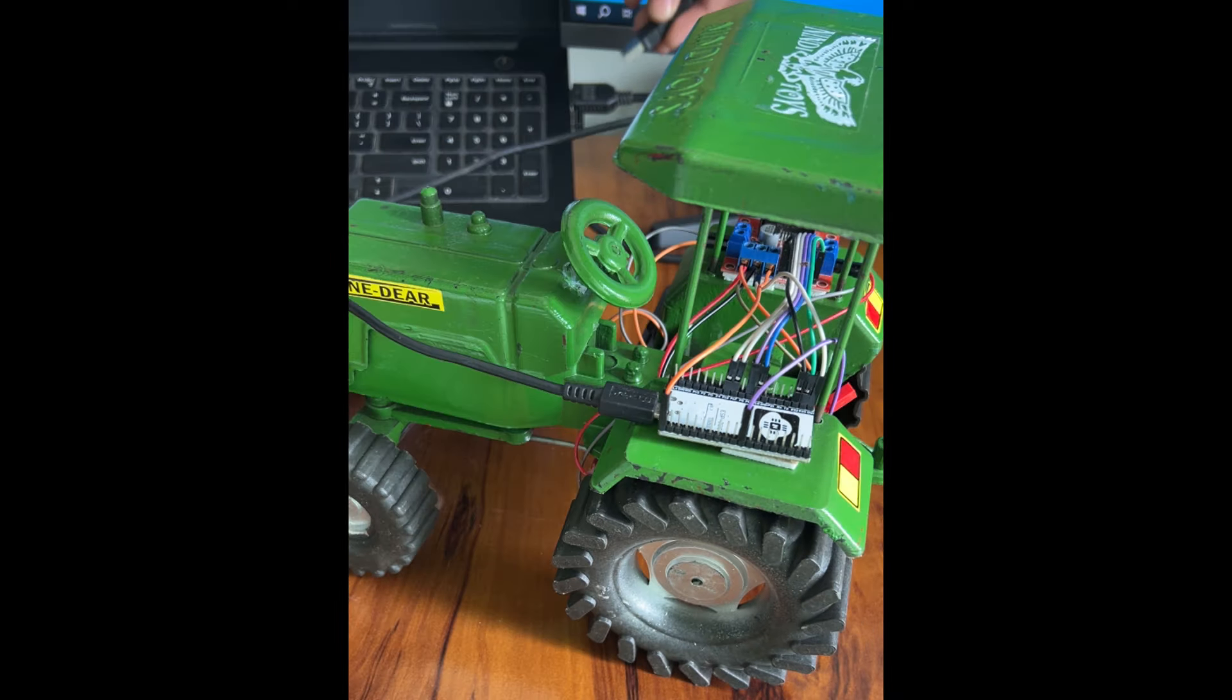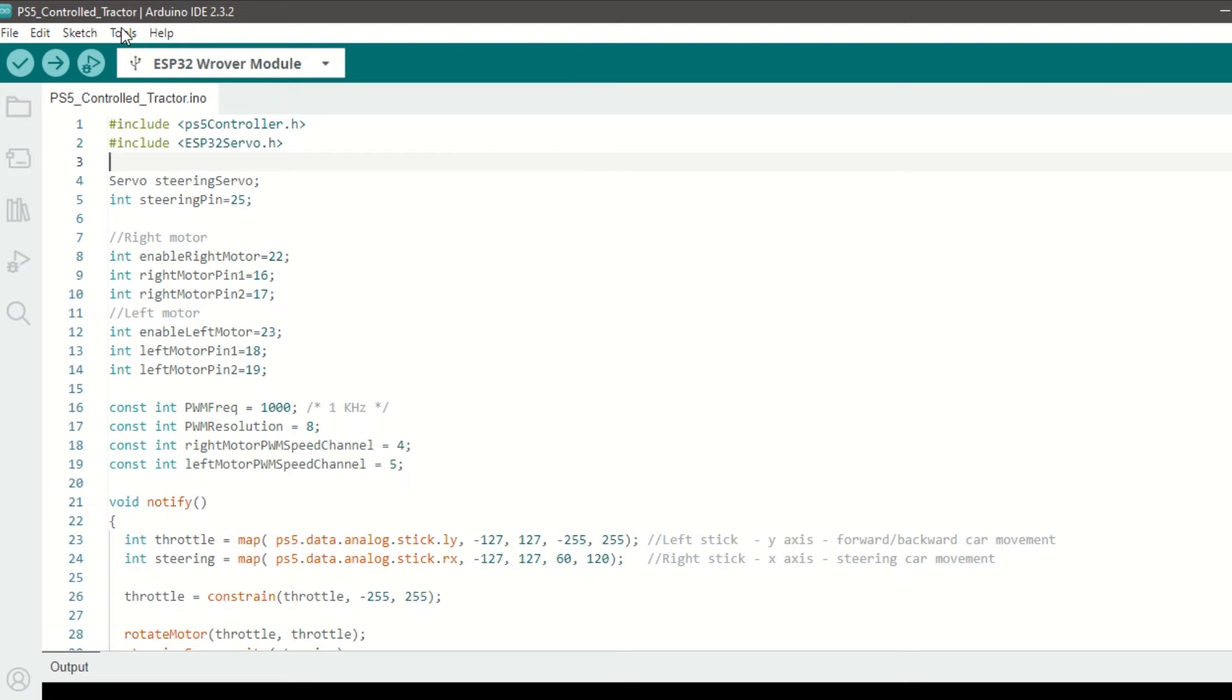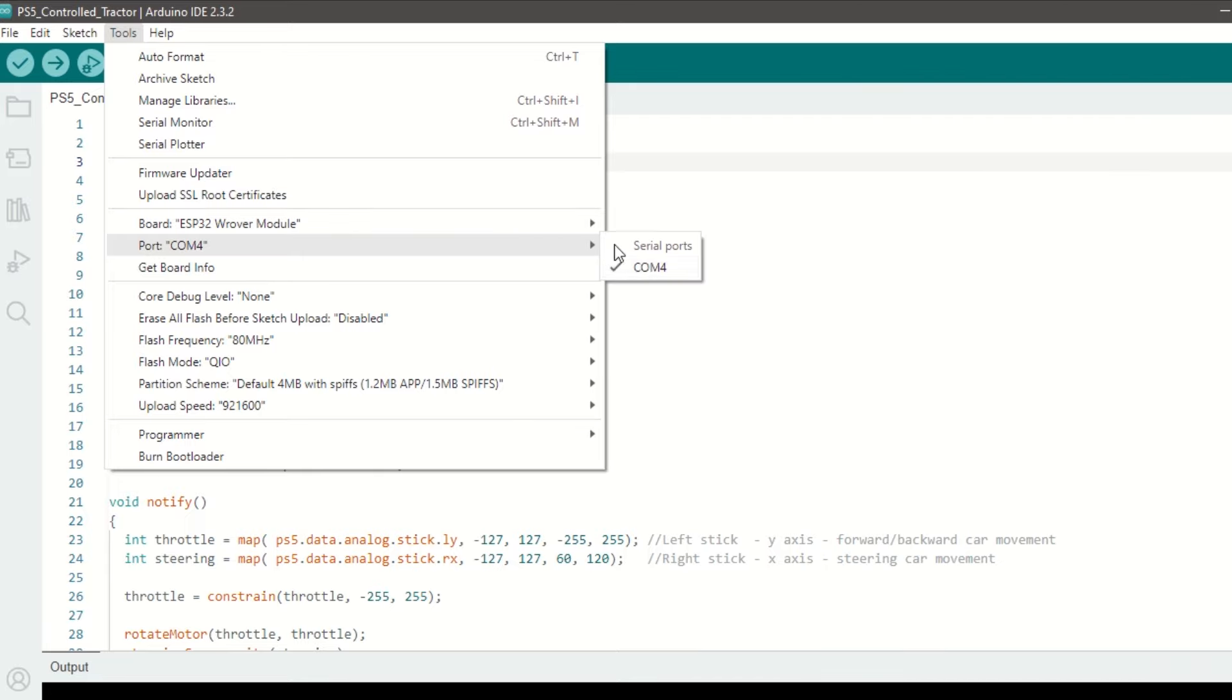Now let's upload the code. Connect ESP32 module to laptop using USB cable. Select ESP32 Wrover module and port. Hit upload.